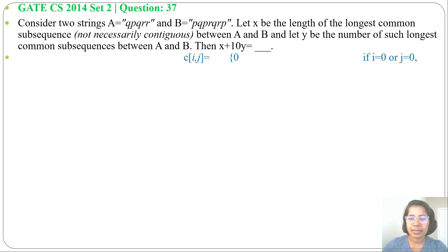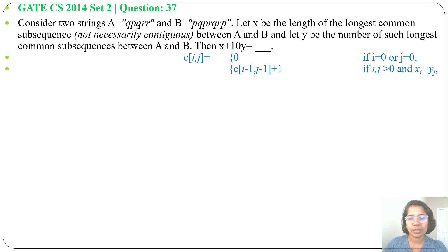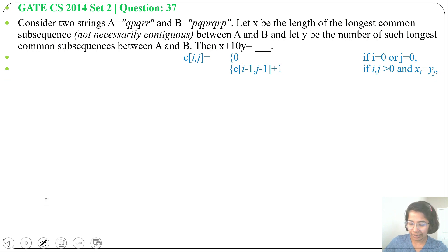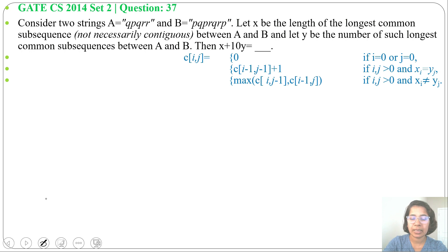Let me first write the recurrence relation for C[i][j]. C[i][j] is the length of the LCS. It will be 0 if either i or j equals 0. Then C[i-1][j-1] plus 1 if X[i] equals Y[j]. If X[i] not equals Y[j], then it will be max of C[i][j-1] and C[i-1][j]. Let me create the table.